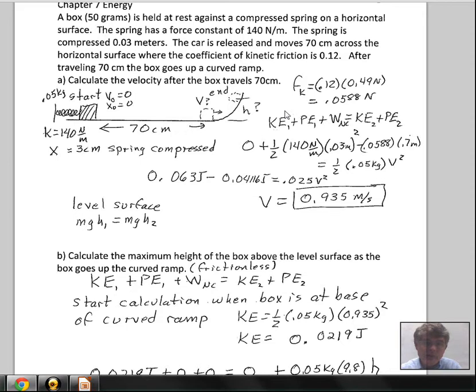We have a supply of energy at the start, kinetic plus potential. In this situation, the box is at rest. There is zero kinetic energy. The spring has potential energy, and we do not need to consider gravitational potential energy here. We're moving on a horizontal surface. H is equal to zero from the MGH calculation for potential energy. The only potential energy at the start I'm going to consider is the spring's potential energy.